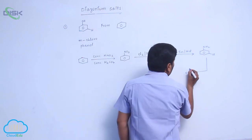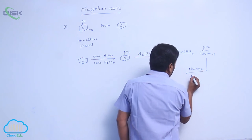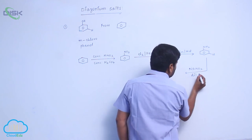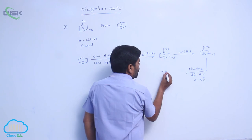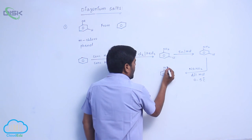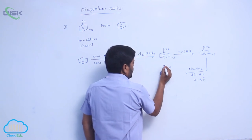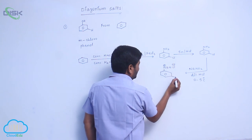To this, sodium nitrite and dilute hydrochloric acid at 0 to 5 degrees centigrade. The amino group converts into diazonium salt: N≡N+ with Cl- counterion.